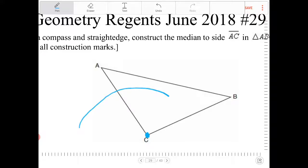You pick up your compass. Do not change the compass setting. And you're going to place the pin on point A, and you're going to draw the same arc but on the other side.